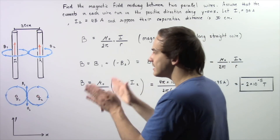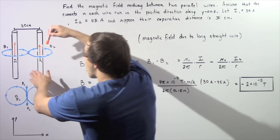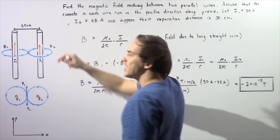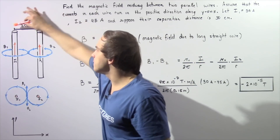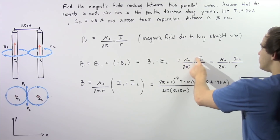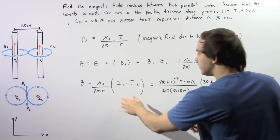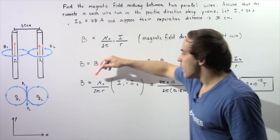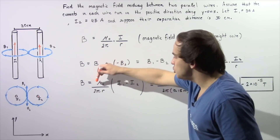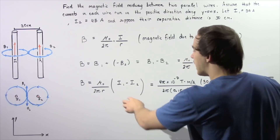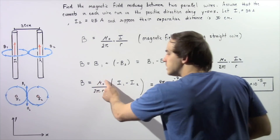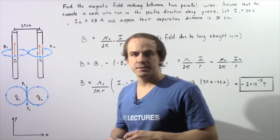The R values in both expressions are exactly the same, since the distance from either wire to the midpoint is equal — simply half the separation distance. Both terms share μ₀, 2π, and R as common factors, so we factor them out. The total magnetic field at the midpoint equals μ₀ divided by 2π, multiplied by (I1 minus I2) divided by R — the difference between the two electric currents.